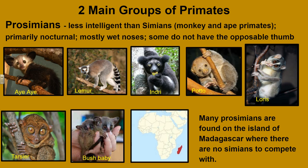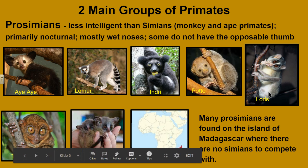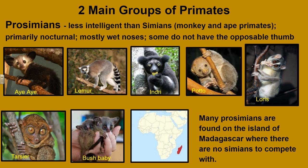We also have the potto, the loris, the tarsier, and the bush babies. If you look at those, they have very large eyes, and that is because they are primarily nocturnal. Many prosimians are found on the island of Madagascar, where there are no simians to compete with.